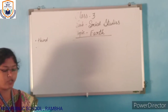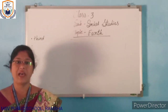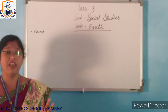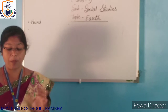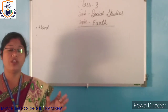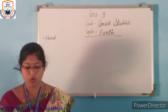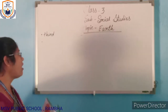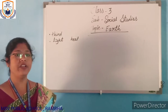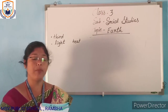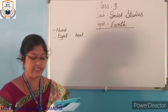Earth is at the right temperature to support life. The sun provides us with light and heat. Both are essential for life.